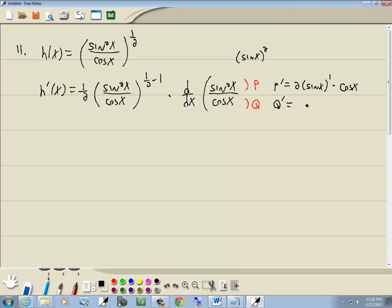Now for q, the derivative of a cosine is negative sine. So we're going to have p prime q minus p q prime over q squared.